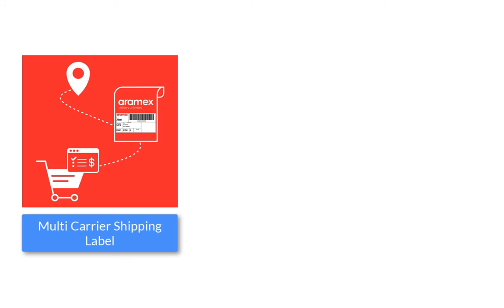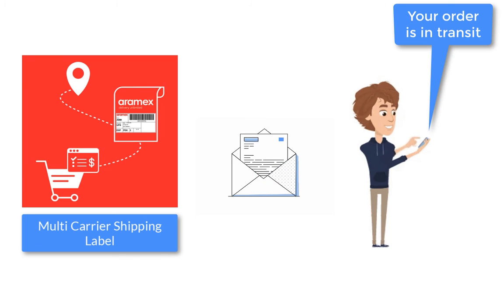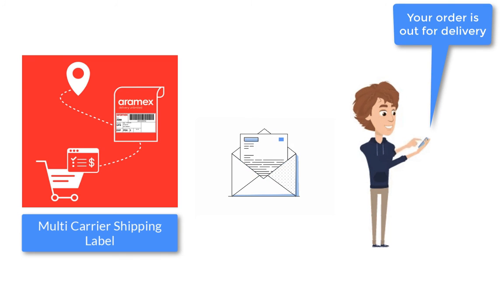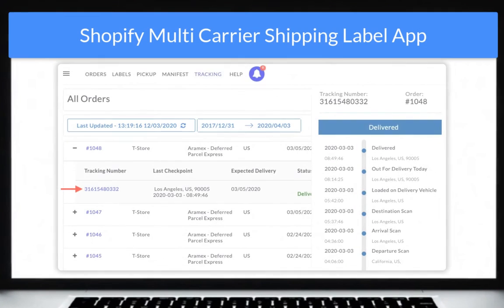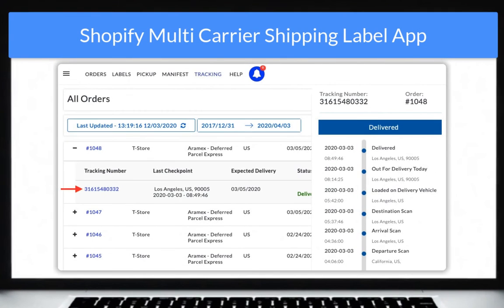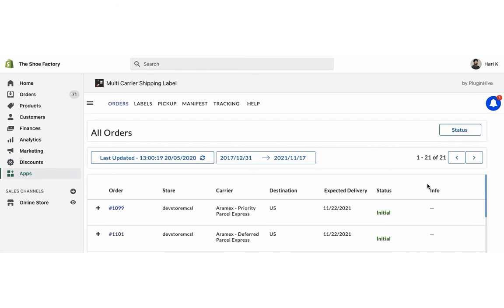The app also notifies the customers on every tracking status update via email, saving you a lot of time and effort. The app also allows merchants to view the live tracking status of all the orders on the shipment tracking dashboard. The dashboard also provides an exclusive view of all the orders based on their tracking statuses.